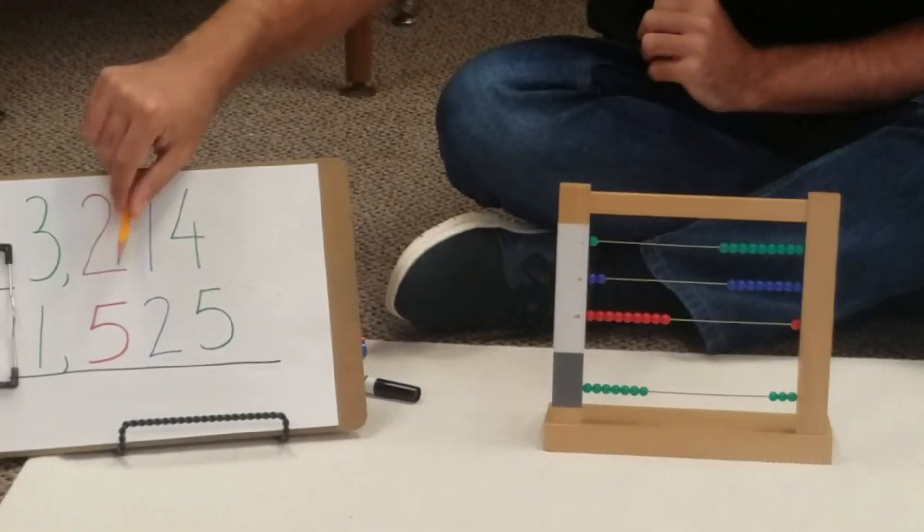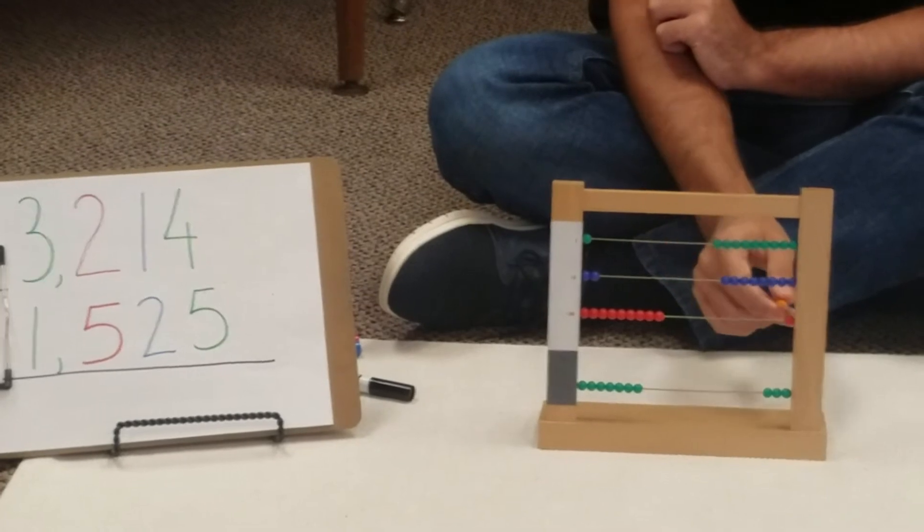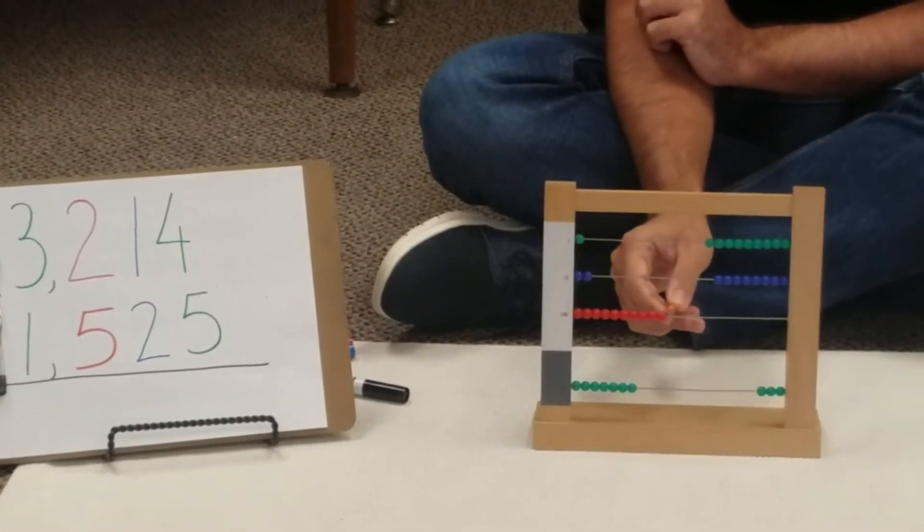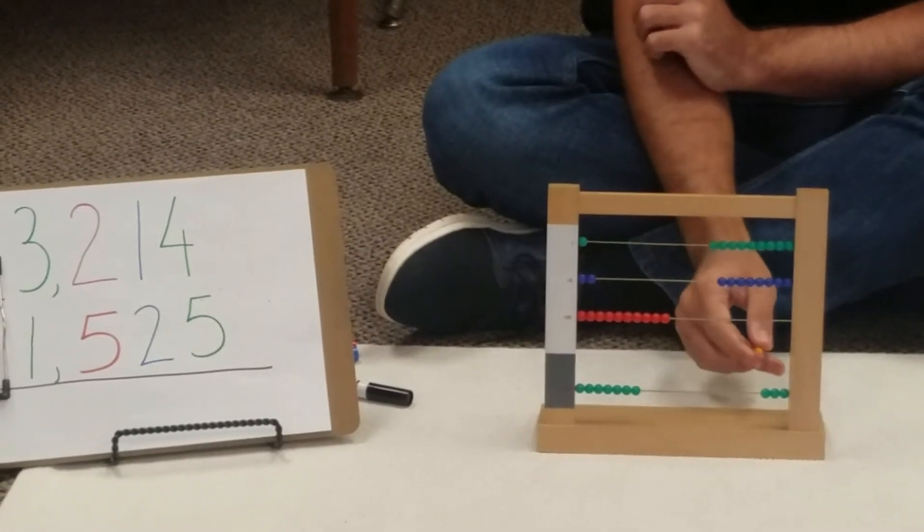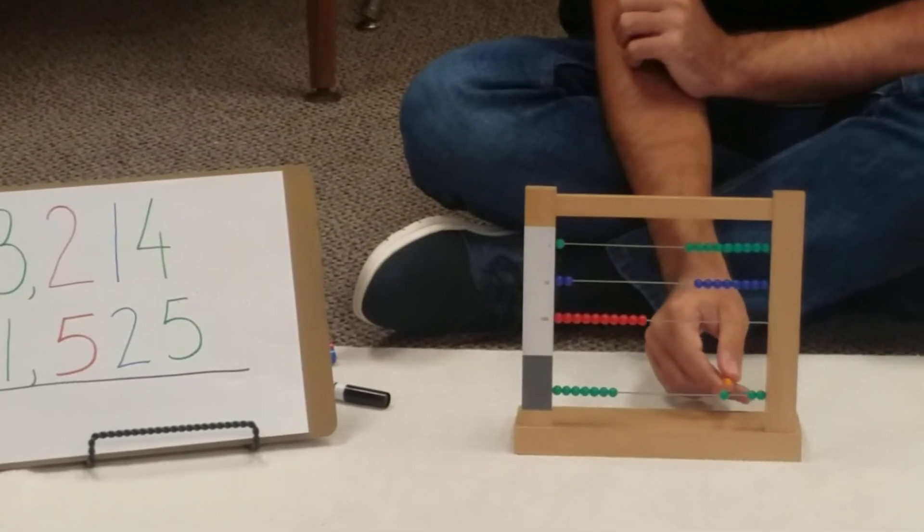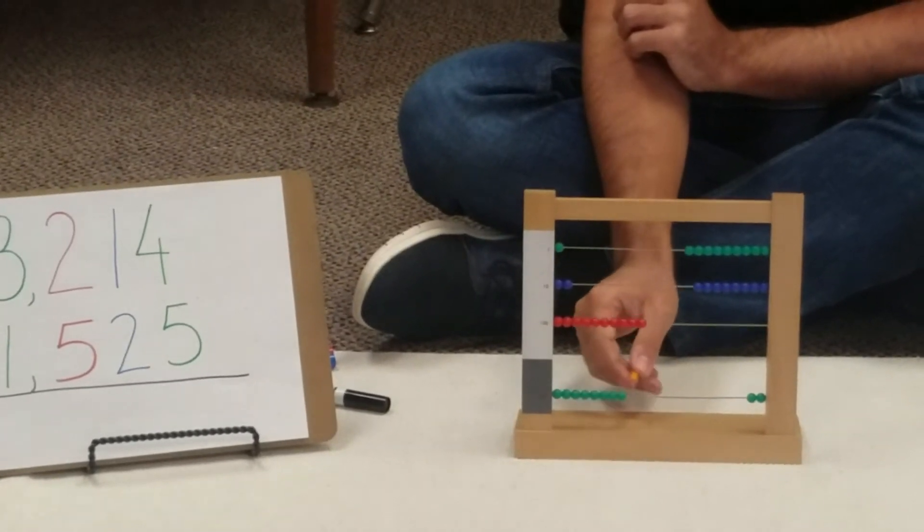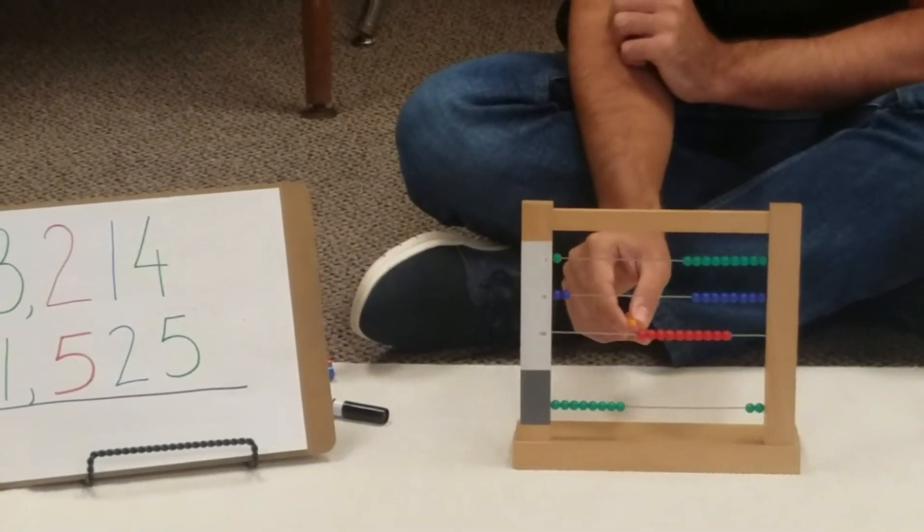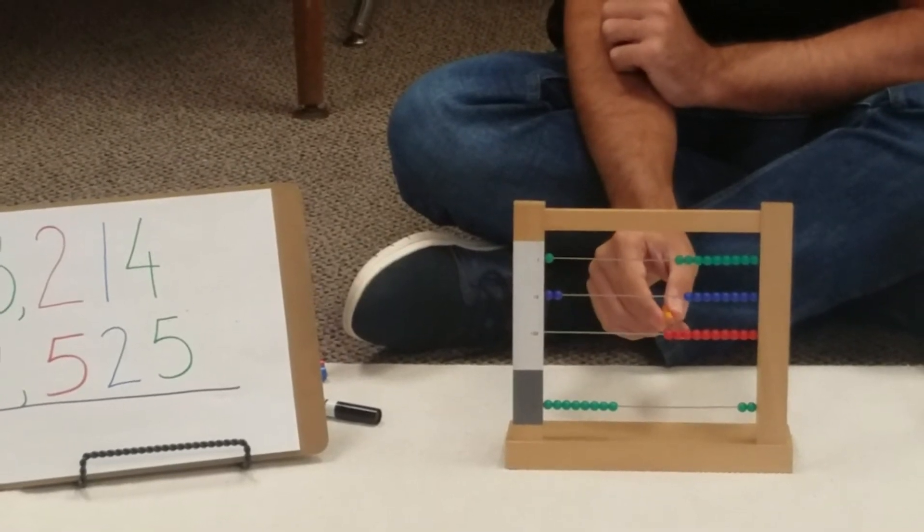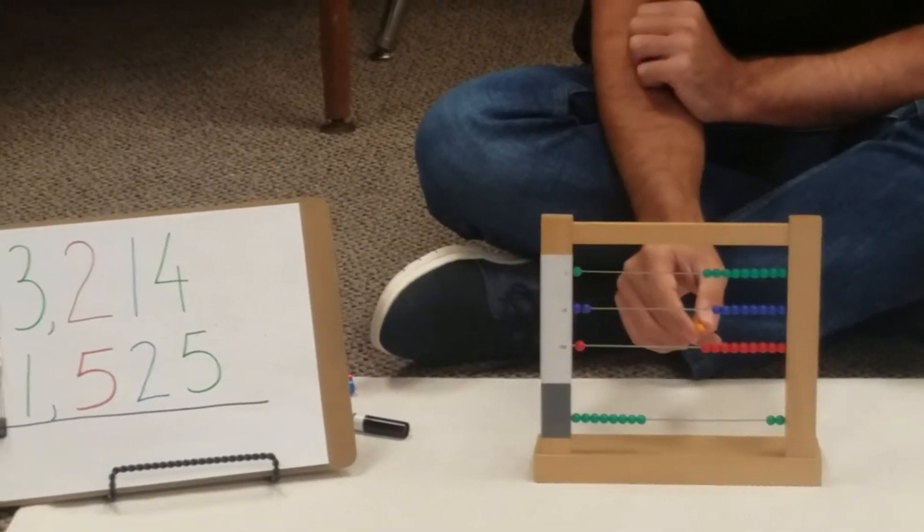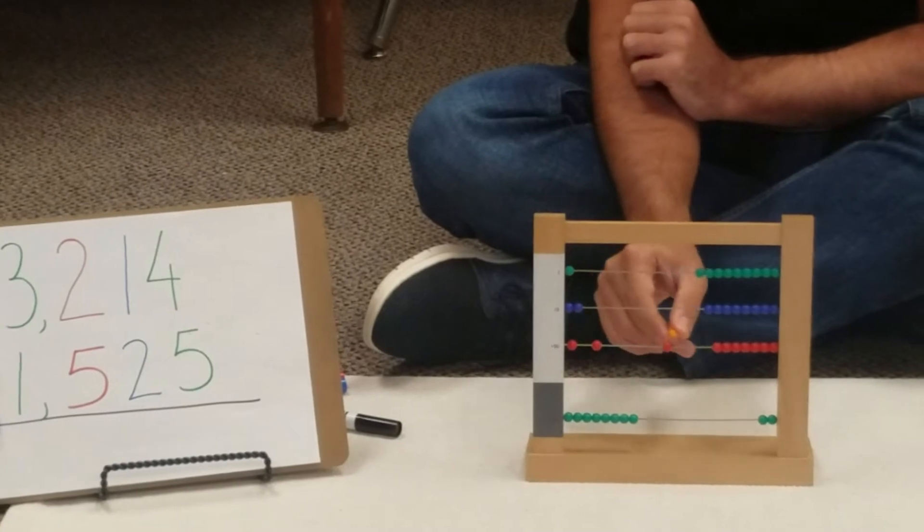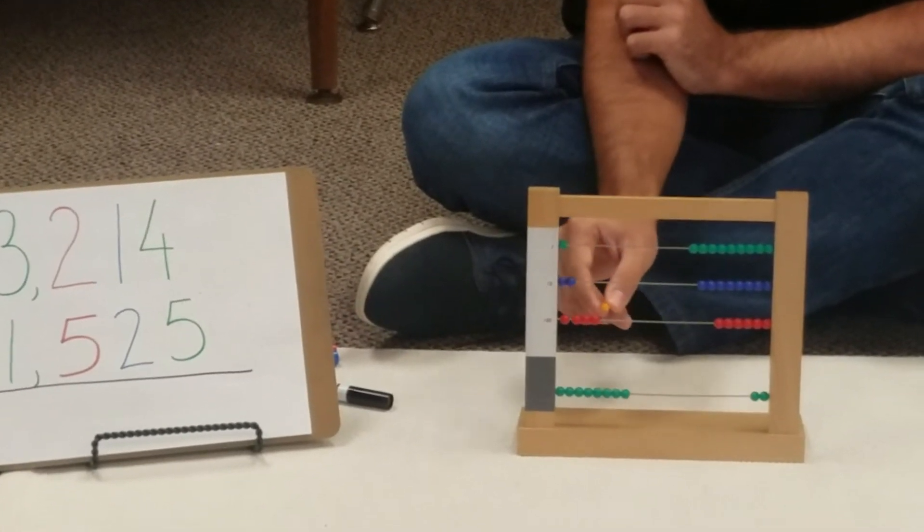The next thing we need to take away is five hundreds. I can take away one hundred, but I don't have more. So I'm going to ask my friend the thousands, and it gives one thousand. One thousand equals ten hundreds. And then we take two, three, four, five hundreds.